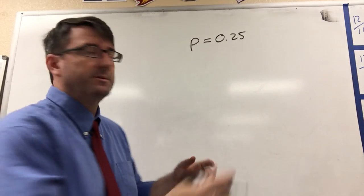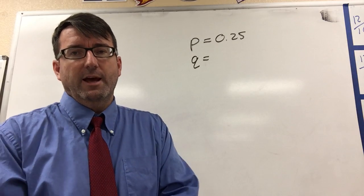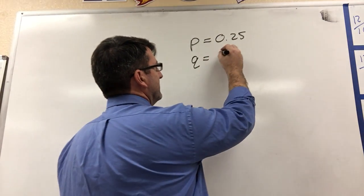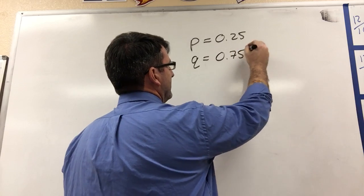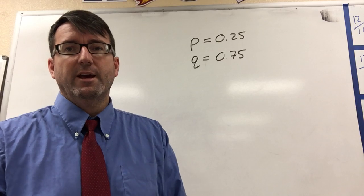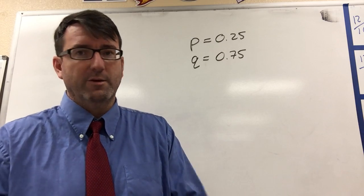And we also need to define Q, which is the probability of not getting a winning lid. And so that's going to be 1 minus P, which is 0.75. So you have a 25% chance of getting a winning lid, which means you have a 75% chance of not getting a winning lid.